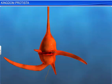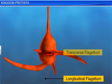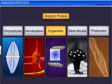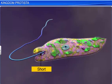Dinoflagellates usually have two flagella: longitudinal flagella and transverse flagella. Their names indicate how both the flagella are positioned. Euglenoids too, like Dinoflagellates, have two flagella — one short and the other a long one.